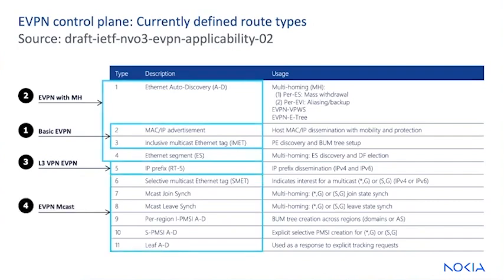The fourth group of route types is for multicast services, and it includes RT6 through RT11. It's not covered here because they're not widely deployed.